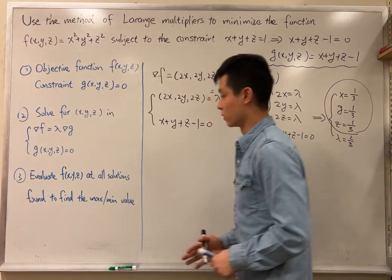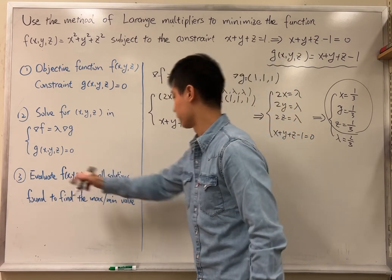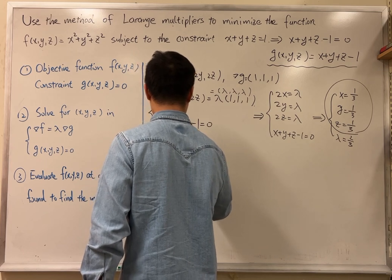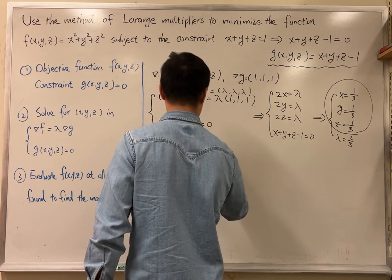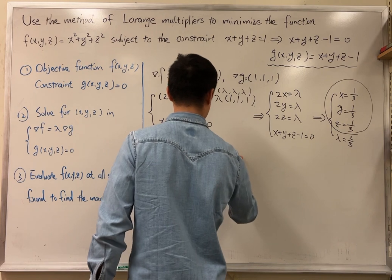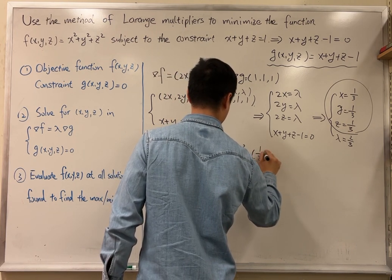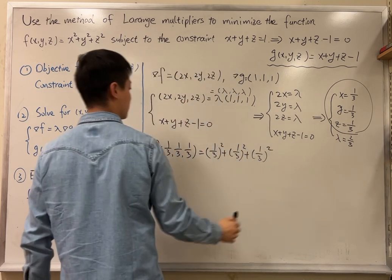Now let's move on to evaluating the function. So evaluate the function at 1/3, 1/3, and 1/3. It's going to give us this, which is 1/3.